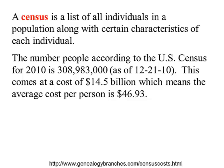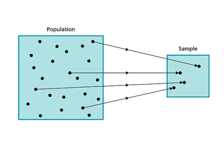When we try to measure something from a population, it is very time consuming and very expensive. A better way is to use a sample. If the sample is representative of the population, it's a lot quicker, easier, and less expensive. We can then use the sample to make an inference about the population.